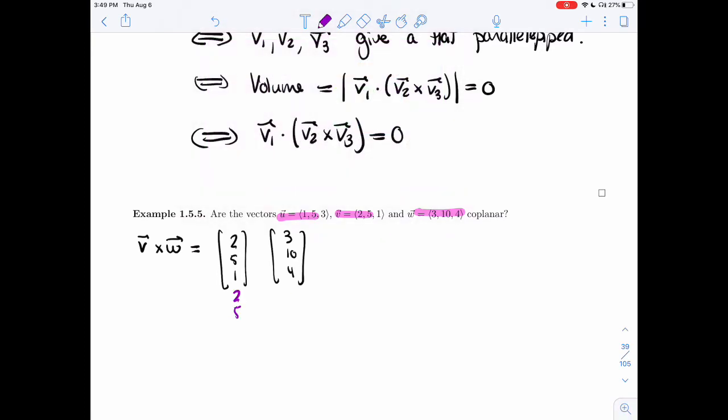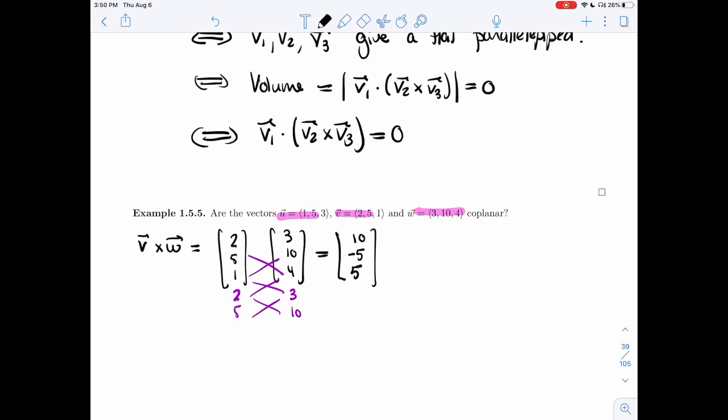I'll start with the cross product. So I get 2, 5, 3, 10, cross. So I get 20 minus 10, I get 10. I get 3 minus 8, I get minus 5. And I get 20 minus 15, I get 5.